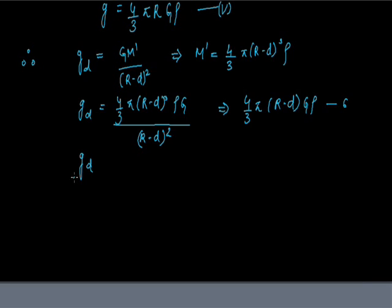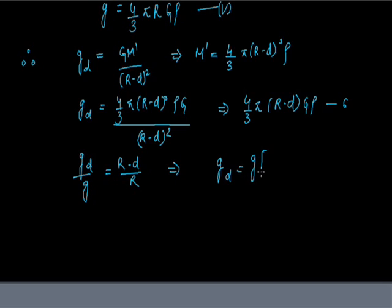The ratio of g_D to g remains (R minus D) upon R. This implies that g_D equals g times (1 minus D/R). This is our seventh equation, and this is the value of g at the depth D below the earth's surface.